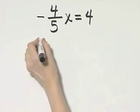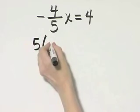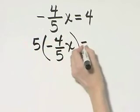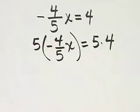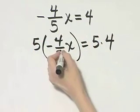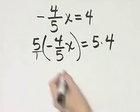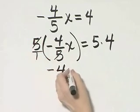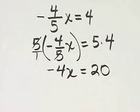So I'll multiply the left side by 5, and I'll multiply the right side by 5. Now notice what happens. Think of it as 5 over 1. The 5s divide out, and I have negative 4x is equal to 20.